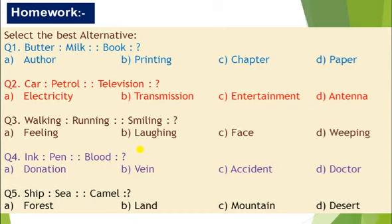Question number four: Ink, Pen, Blood. In pen there is ink. So where is blood? Donation, vein, accident, doctor.